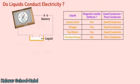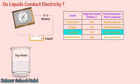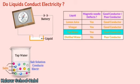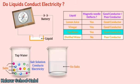Focus on distilled water and tap water. Tap water is a good conductor, but distilled water is a poor conductor. The reason lies in the fact that tap water contains different salts dissolved in it, and salt solutions conduct electricity. Salts are absent in distilled water, and therefore distilled water won't conduct.